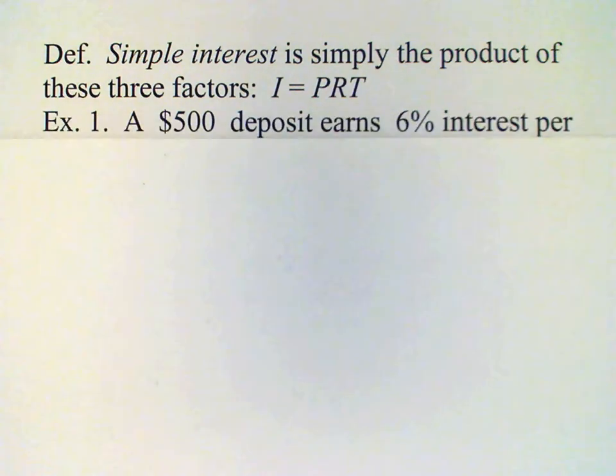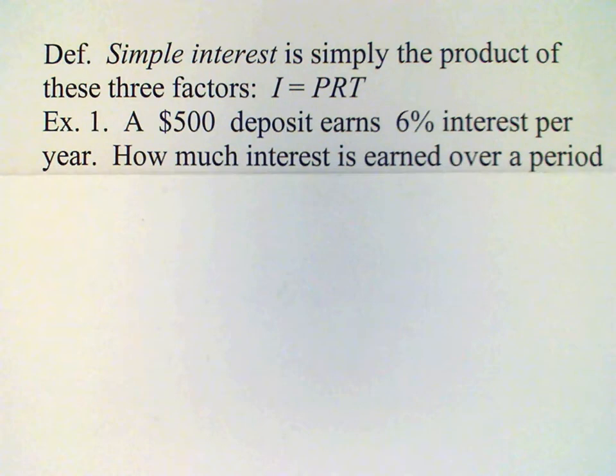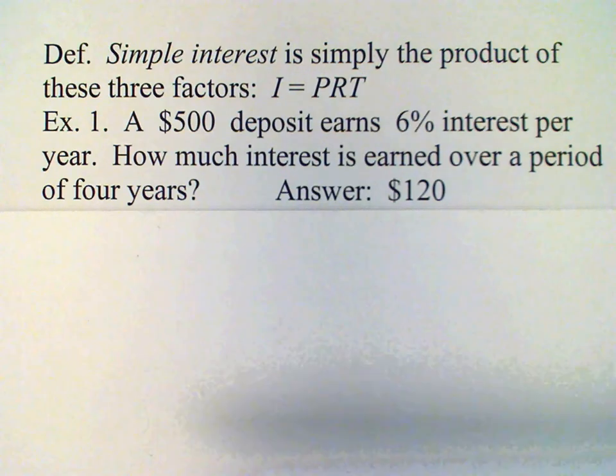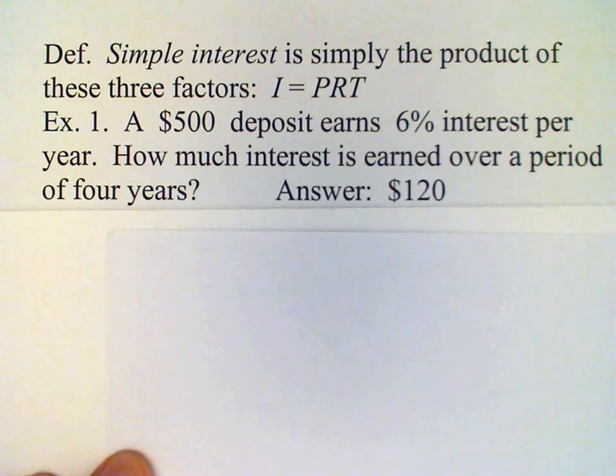For example, we have a $500 deposit, which earns 6% interest per year. How much interest is earned over a four-year period? The answer given here is $120. Let's see how we come up with that.